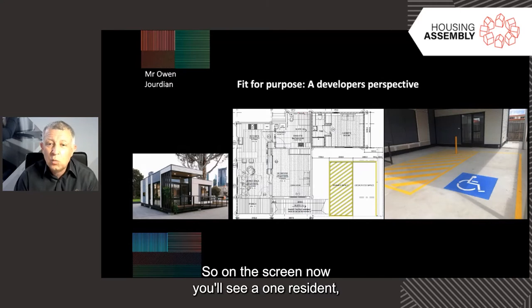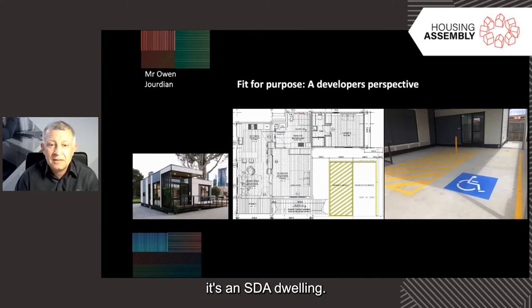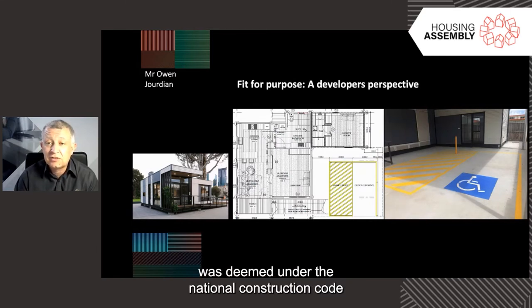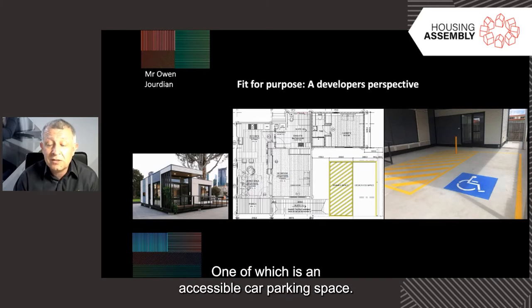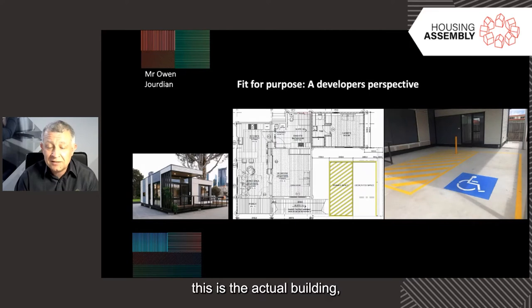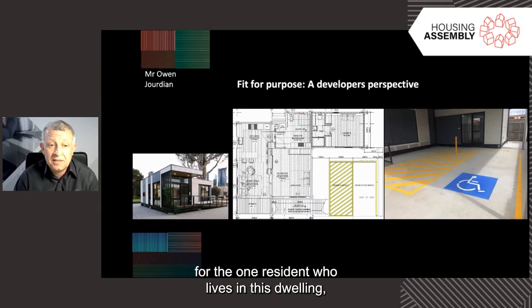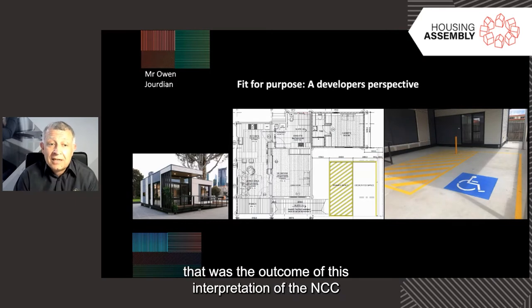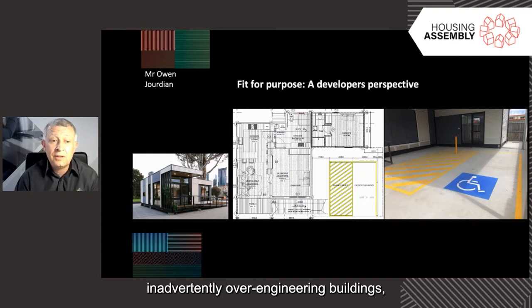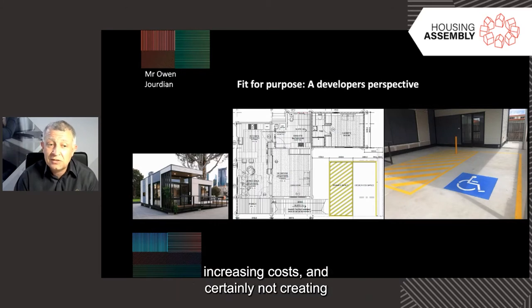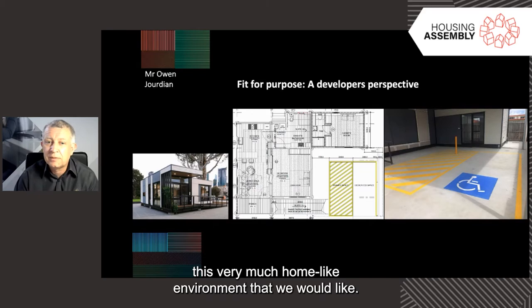As an example: on screen is a one-resident, one-bedroom, open-plan living modular SDA dwelling. When it was installed on site with a carer's unit next door, the building certifier deemed it Class 3 under the National Construction Code. With Class 3 comes a host of requirements, one of which is an accessible parking space. So this dwelling — for one resident — has an accessible parking space installed in the carport. This highlights where we might be inadvertently over-engineering buildings, increasing cost, and not creating the home-like environment we would like.